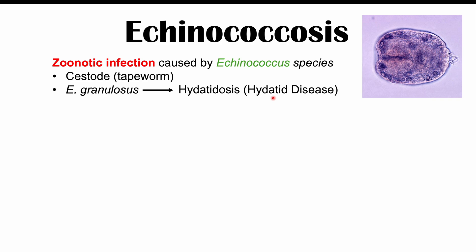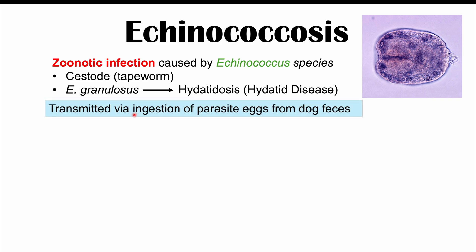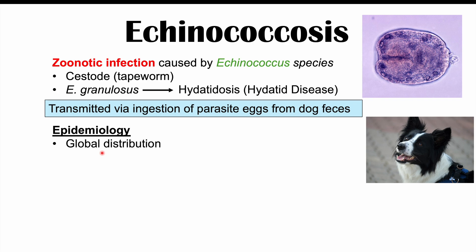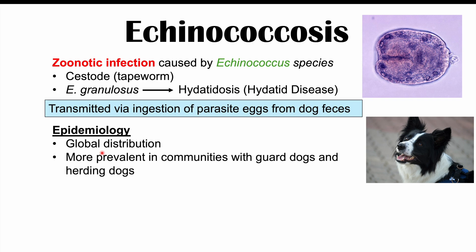Humans can get infected by echinococcus tapeworms via accidental ingestion of parasite eggs from dog feces — again, often from stray dogs, wild dogs, coyotes, and sometimes even foxes. Echinococcus infections can occur globally, but they're most often going to occur in more rural communities or communities with guard dogs and herding dogs, anywhere where there are more wild or loose dogs that can themselves be infected and then bring it back to humans.